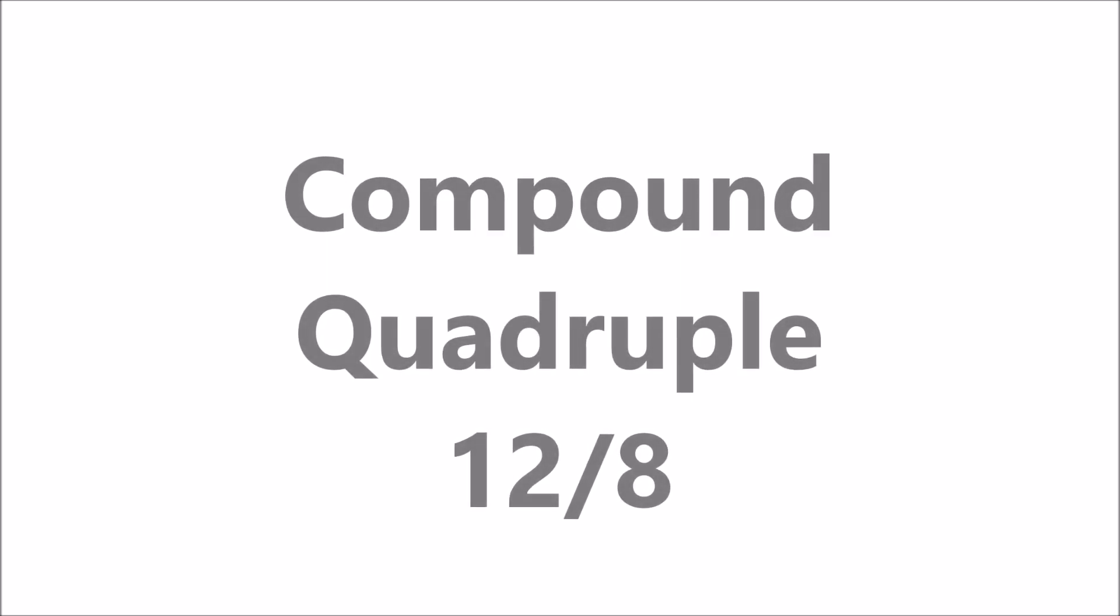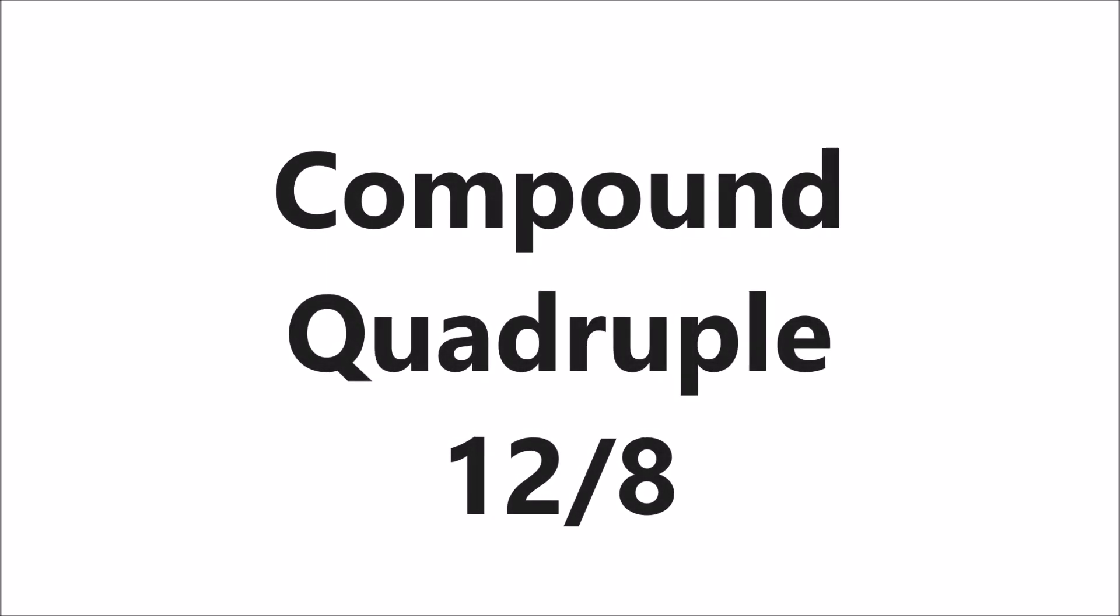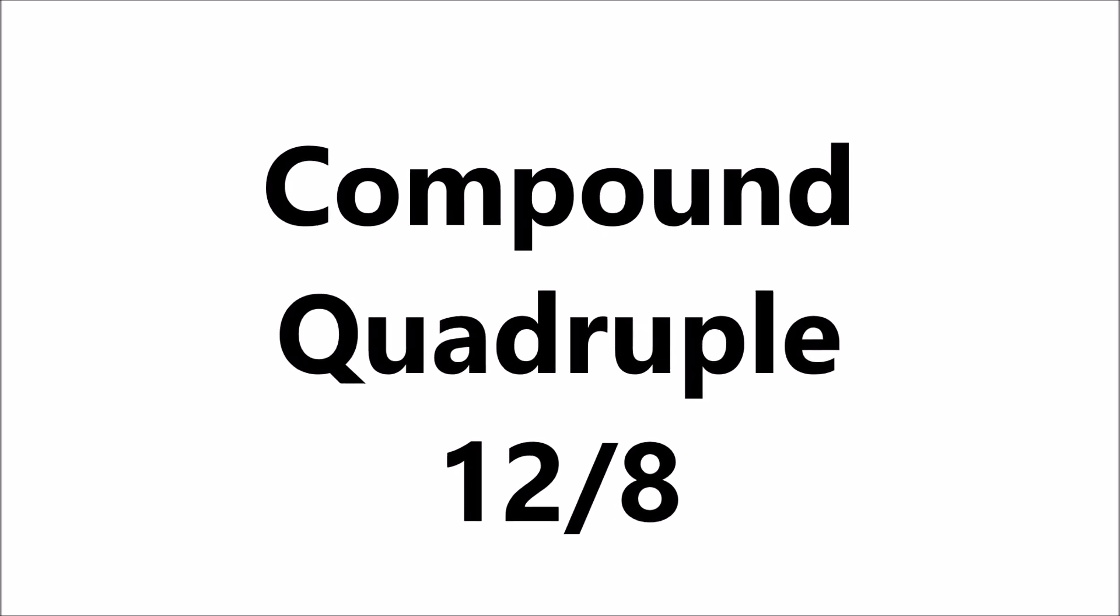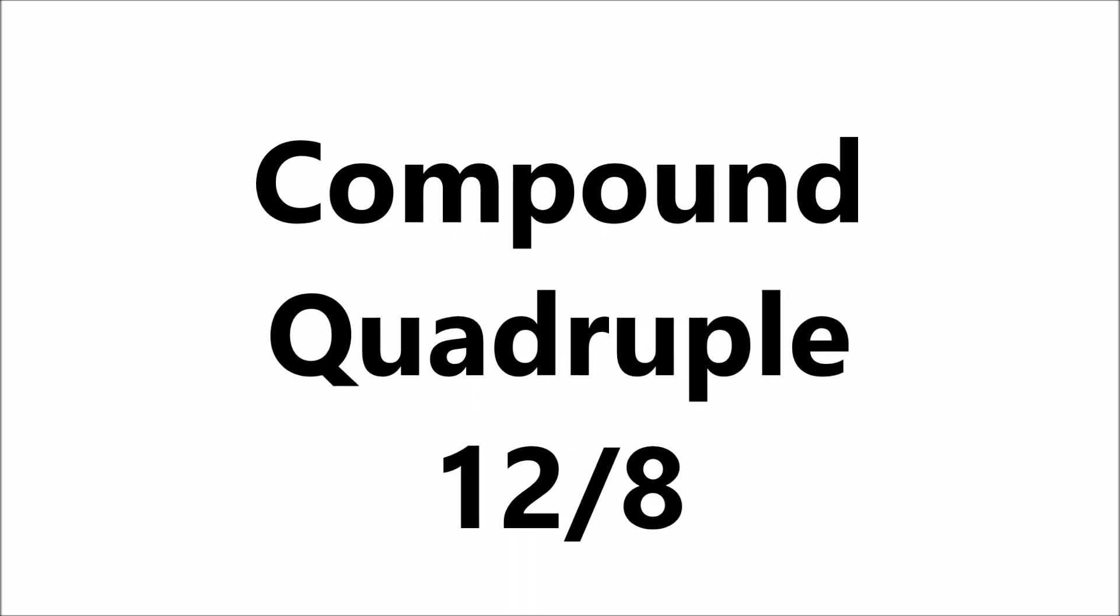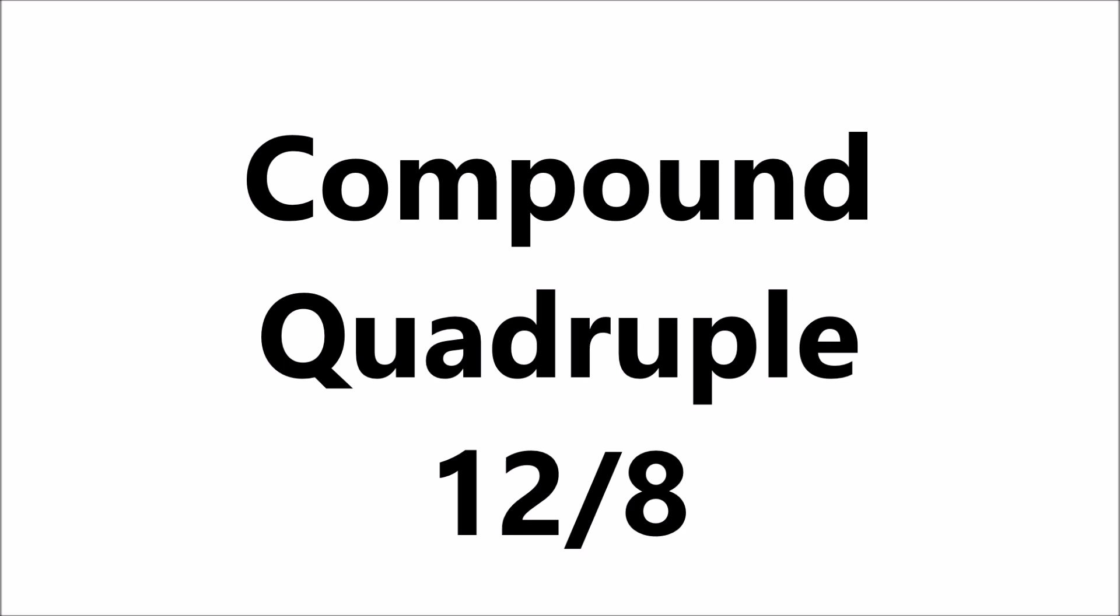On the other hand, 12-8 time would be compound quadruple time. Compound because the beats are dotted crotchets, and quadruple because there are four beats in a bar.